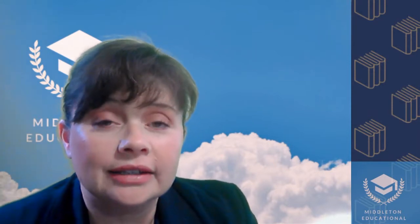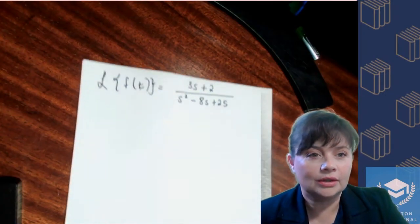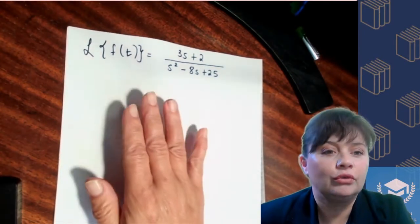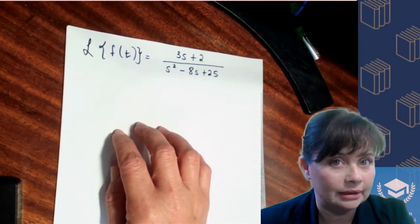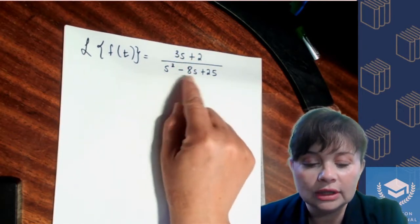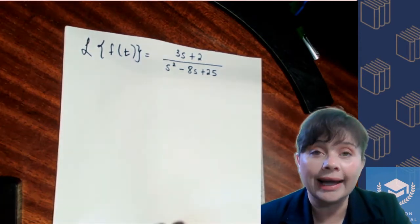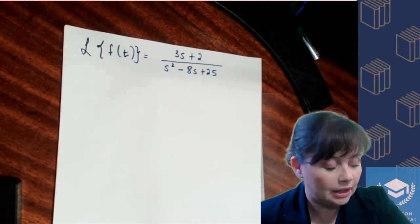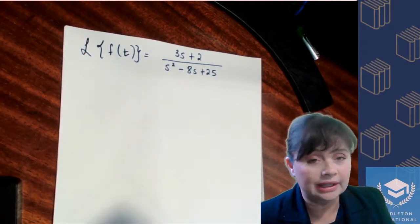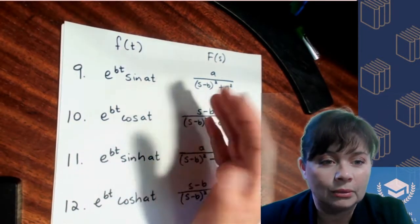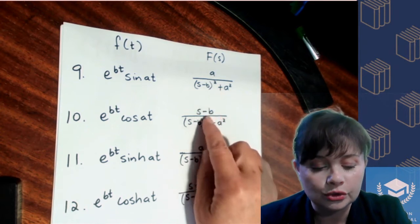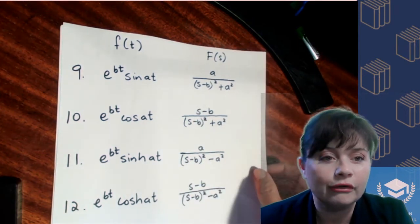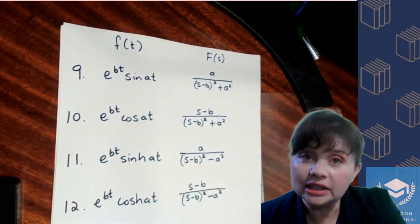Hi everyone, let's have a look at an example finding the inverse Laplace transform using completion of the square. Finding the inverse Laplace transform means we are moving from our frequency domain into our time domain, which means moving from where our function has only s's as variables into the time domain where you have t as your variable. The way we do that is we use the table of Laplace transforms, moving from the right-hand side to the left-hand side, making our function into the same form as one of the items on the table.